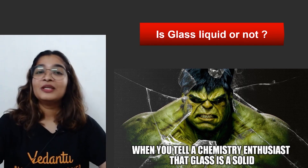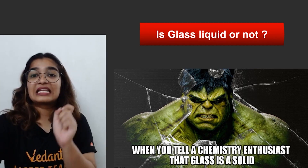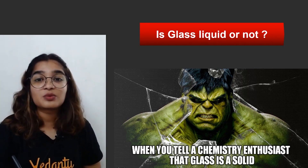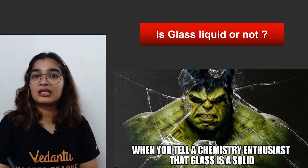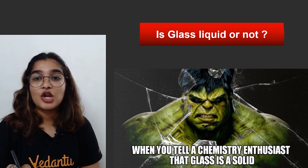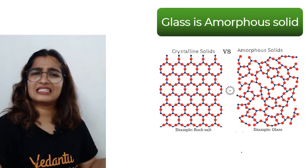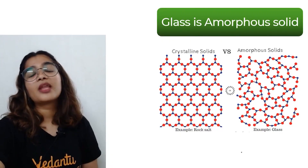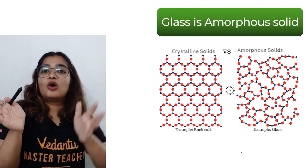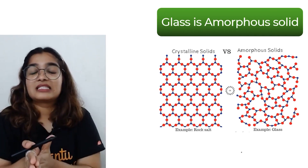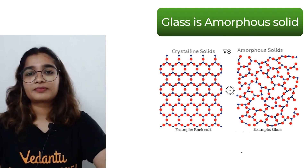Now let's answer the final question: is glass liquid or not? When you tell a chemistry enthusiast that glass is a solid, their expression gives away the answer — glass is not a solid. But is it a liquid? No. It lies somewhere between solid and liquid. It is an amorphous solid.